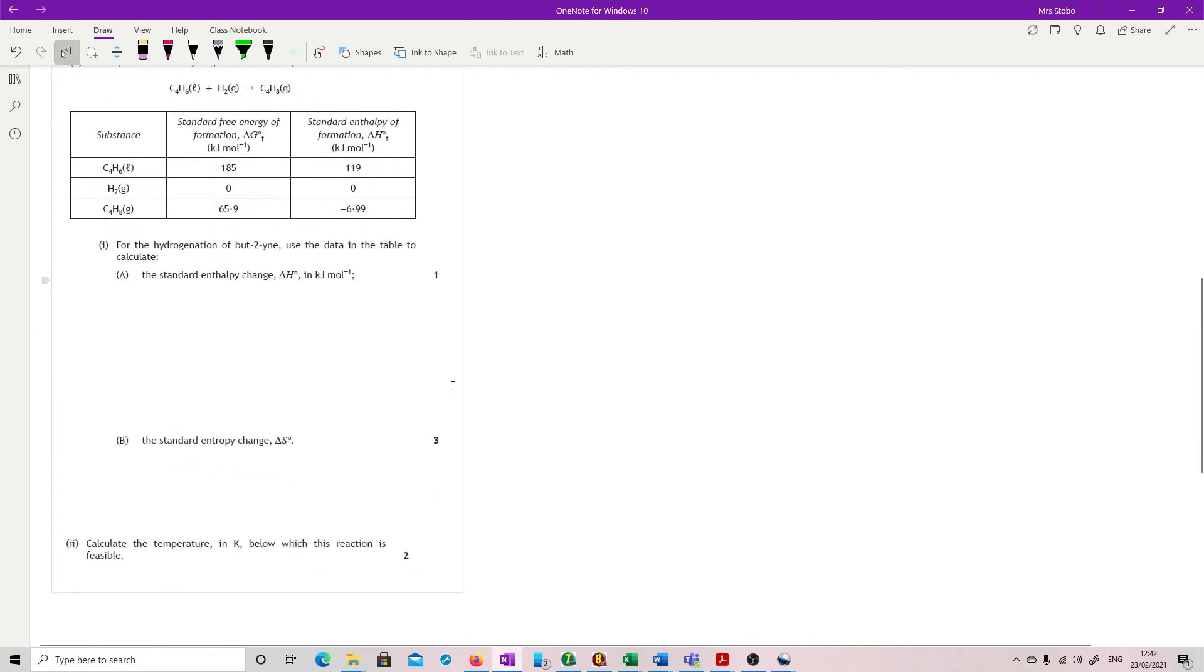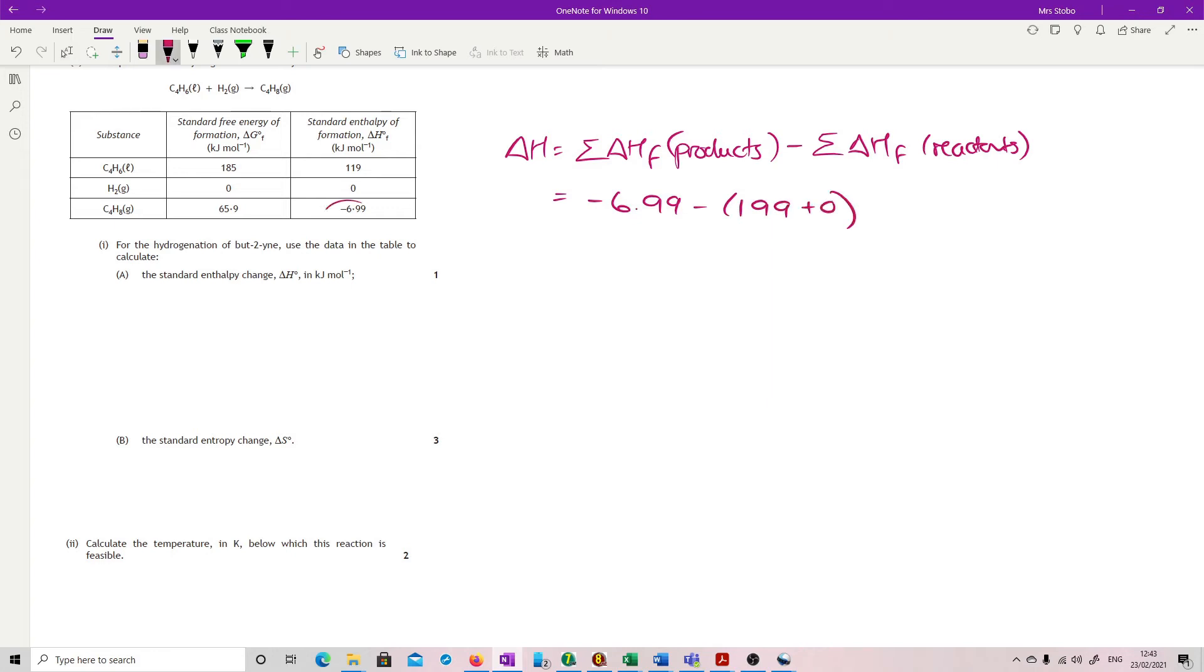Calculations. We are looking at enthalpy calculations here, delta-G really, feasibility. From the hydrogenation of bute-2-ine, use the data in the table to calculate the standard enthalpy change. Reasonably gifty. It's straight out of the data book. You're just looking at delta-H is the sum of your formation of products minus the sum of your delta-HF of reactants. Plug them in. So minus 6.99 minus 199 plus 0. There's your product and there's your reactants. Put it all in your calculator. You get 125.99, which they're expecting you to take to 126 kilojoules per mole.